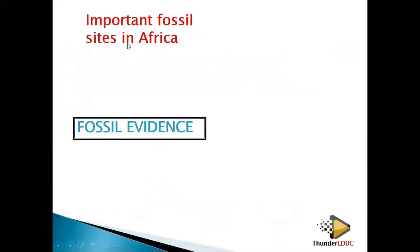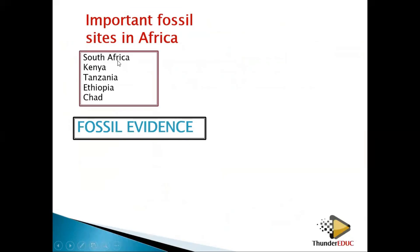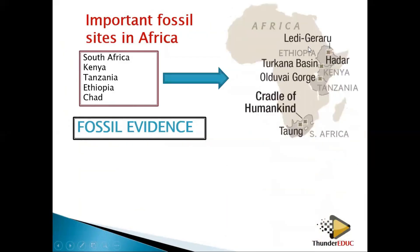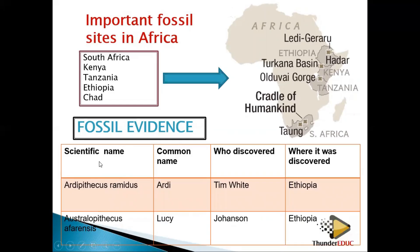What are some of the important sites in Africa which support this fossil evidence? We have South Africa, Kenya, Tanzania, Ethiopia, and China. If you look at this map, it shows you the different countries in their locations. For the fossil evidence, you need to know at least the scientific name, common name, who discovered it, where it was discovered, and at least the age.